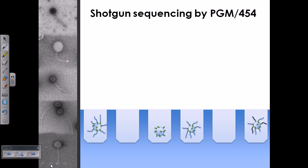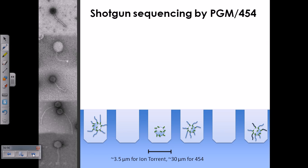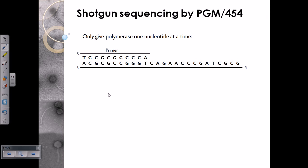All the bead-containing genes to be sequenced are then put into the wells of the machine slides. Let's take one such well and look at how sequencing proceeds. This is the strand to be sequenced, and this is the primer that was added during the amplification process.